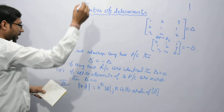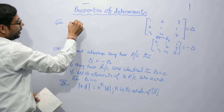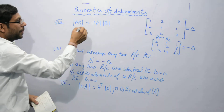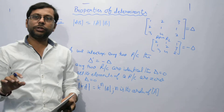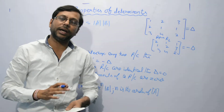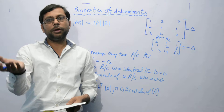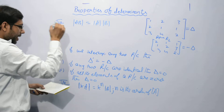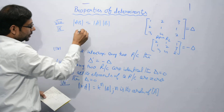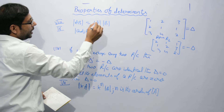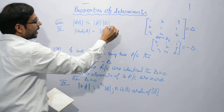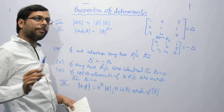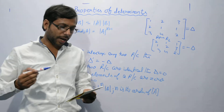Property number eight: the determinant of A into B equals the determinant of A multiplied by the determinant of B. If you find the determinant of the product of A and B, you will get the same result as multiplying their individual determinants. Property number nine: the determinant of the adjoint of A is the determinant of A raised to the power n-1, where n is the order of matrix A.